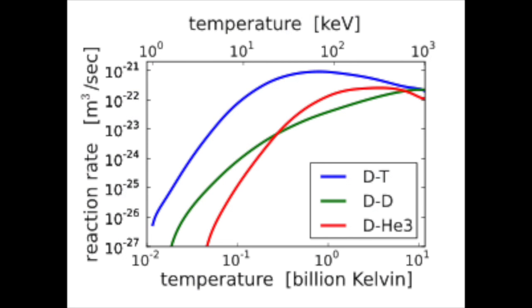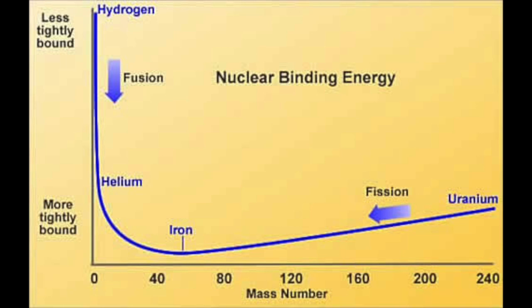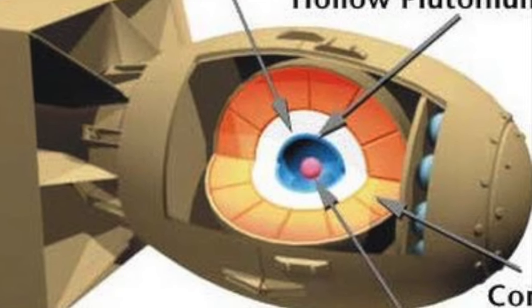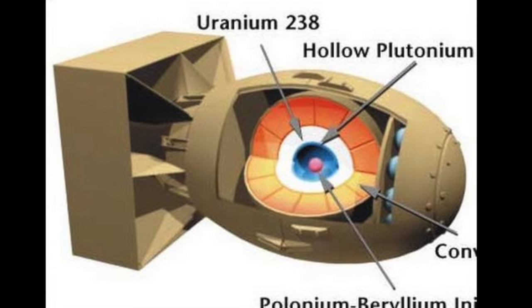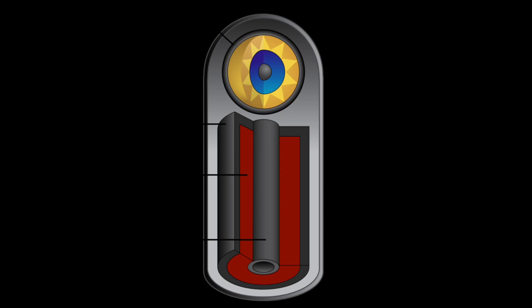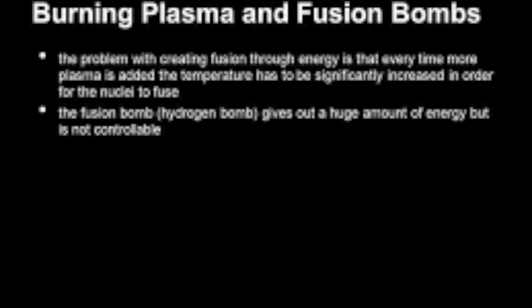At extremely high temperatures, the nuclei of hydrogen isotopes deuterium and tritium can fuse, releasing enormous amounts of energy in the process. Weapons that take advantage of this process are known as fusion bombs, thermonuclear bombs, or hydrogen bombs. Fusion bombs have higher kiloton yields and greater efficiencies than fission bombs, but they present some problems.